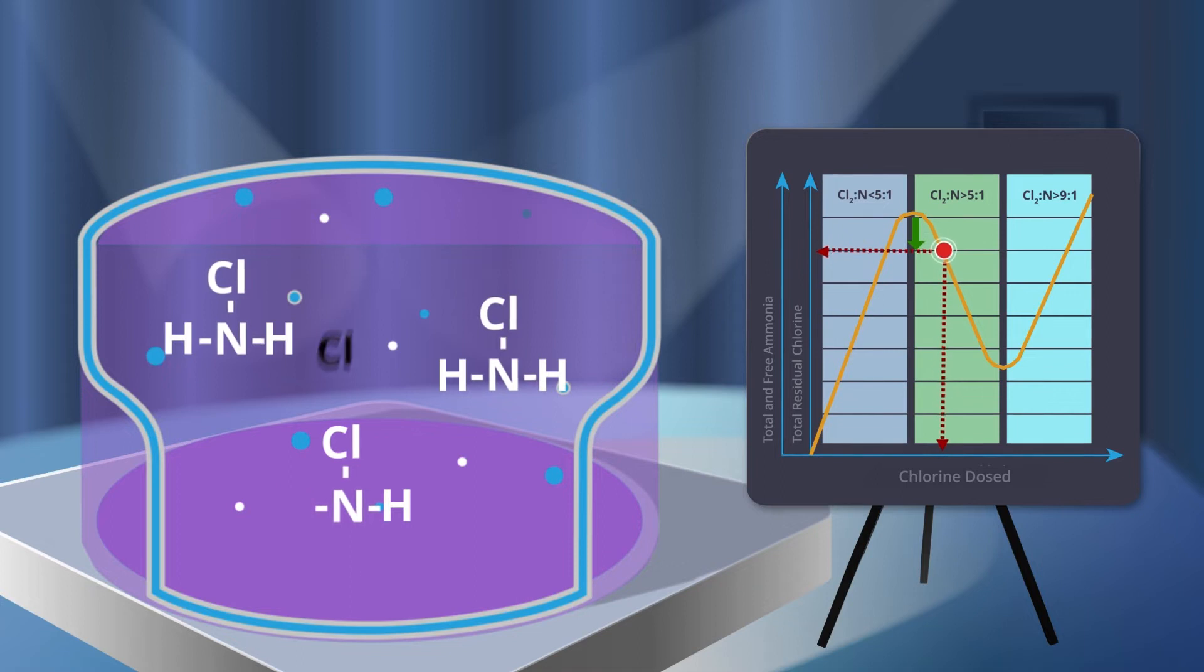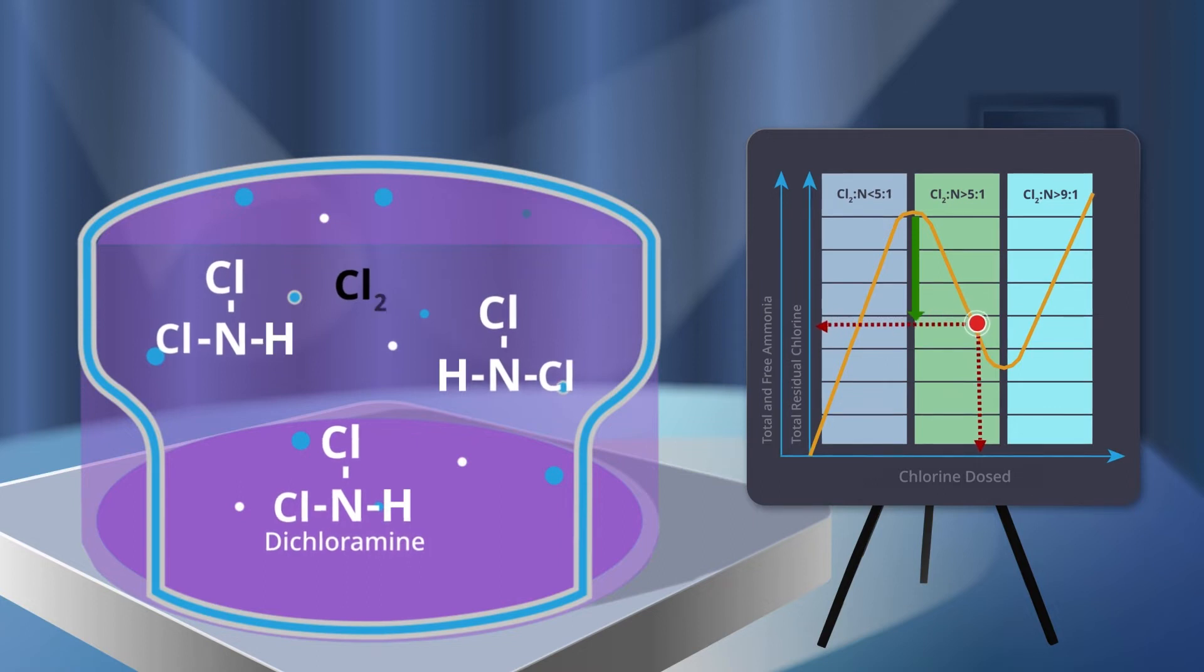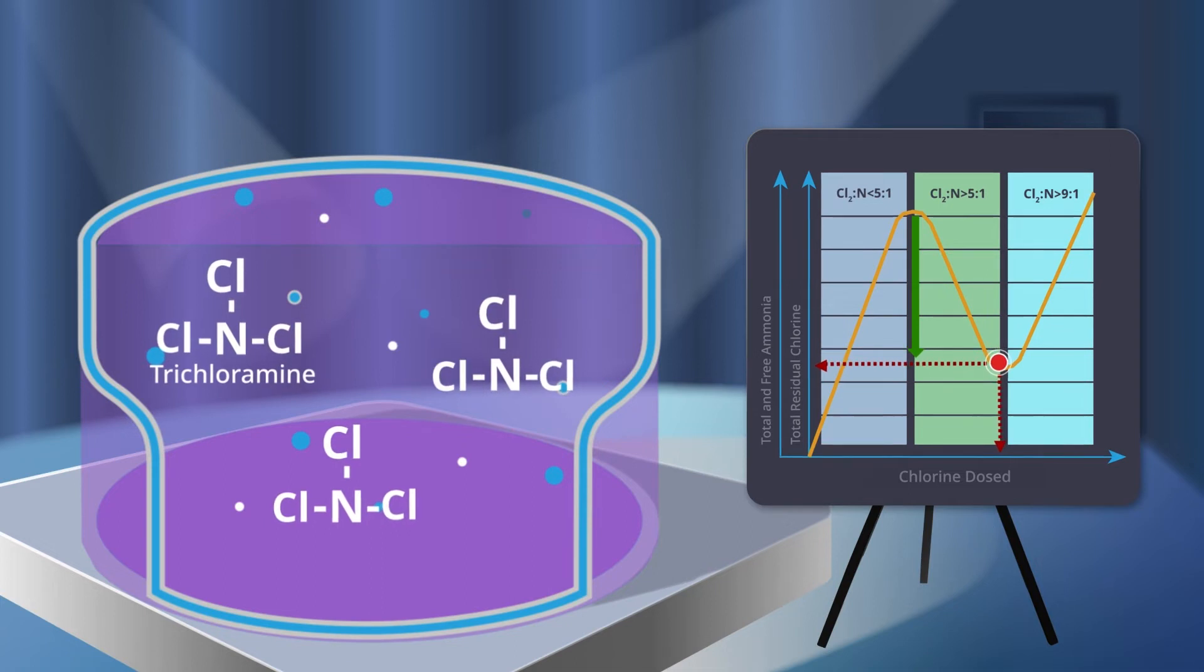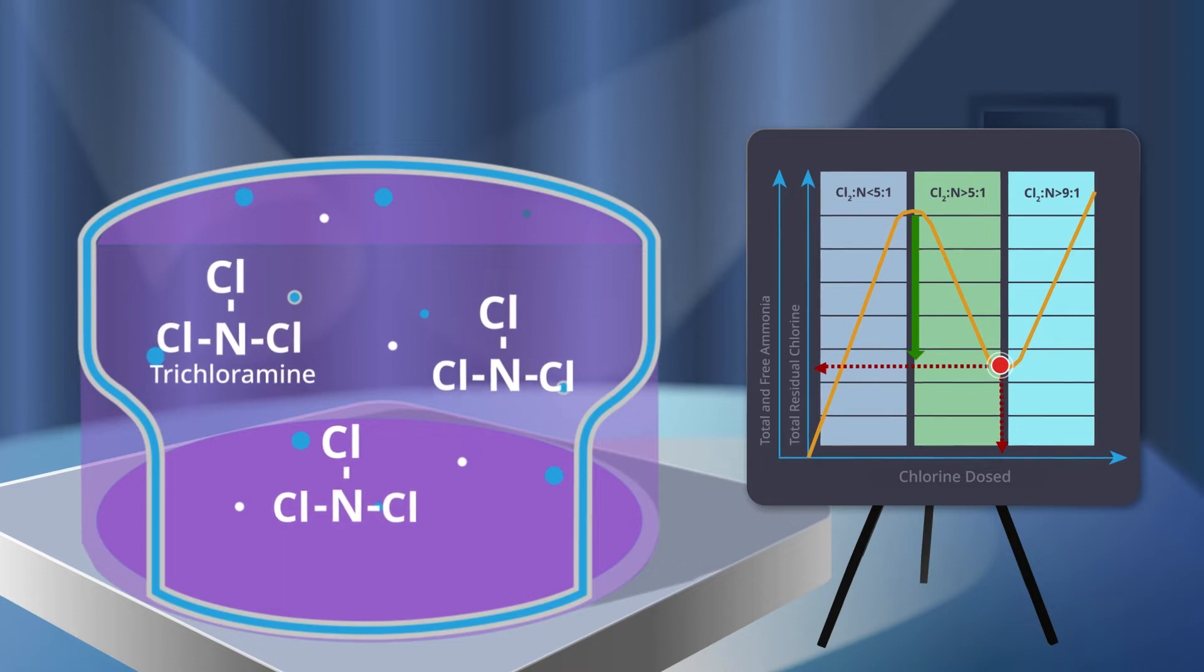If you continue to dose chlorine past this state, you begin to experience formation of dichloramine and, finally, trichloramine. These states are not ideal. It causes your total chlorine residual to drop radically. Although you are adding more chlorine, you will experience taste and odor issues when you are in this zone, and your disinfecting power is significantly diminished.